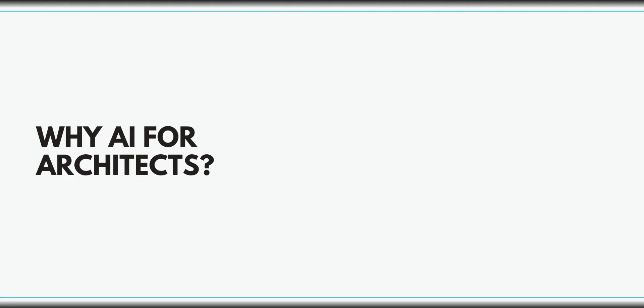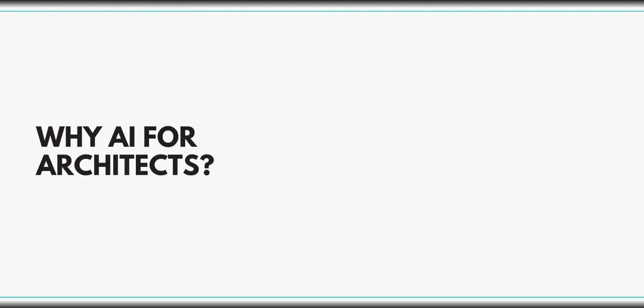So why AI for architects? Why would we use it? The first reason is to use it as a tool. Artificial intelligence serves in automating complex tasks, providing advanced data analysis for sustainable design choices, enabling precise simulation for data testing, and fostering innovative and efficient design processes through machine learning and predictive algorithms. It's something that's working — it's one step beyond just programming; it's actually serving a task.